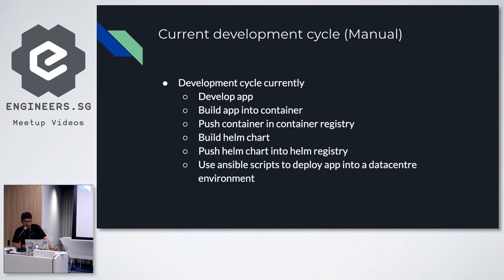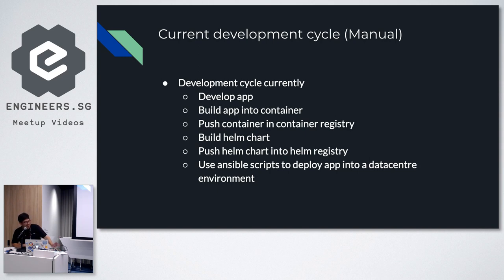This is how the DevOps workflow at Akronix kind of goes: what we need to do is develop the app, check that it's working well, then build that app into a container, push the app into a container registry, then build the Helm chart which absorbs that container, push that Helm chart into the Helm registry, and then the final step is to use Ansible scripts to deploy it to a Kubernetes cluster. So many steps just to get something done.